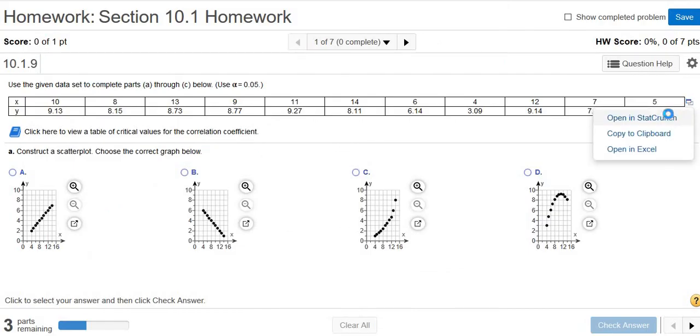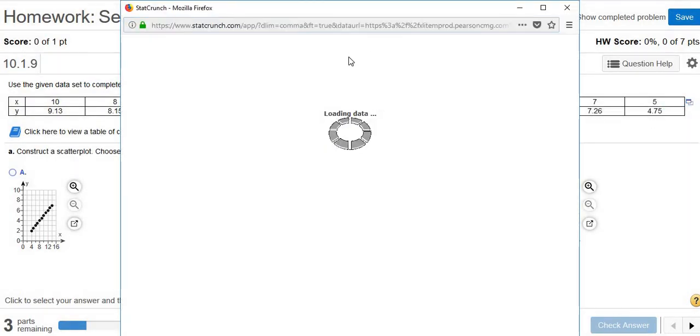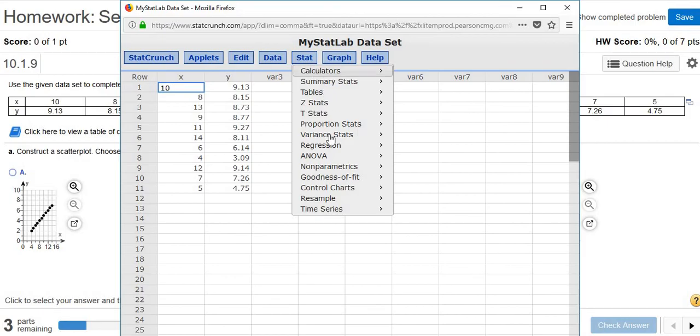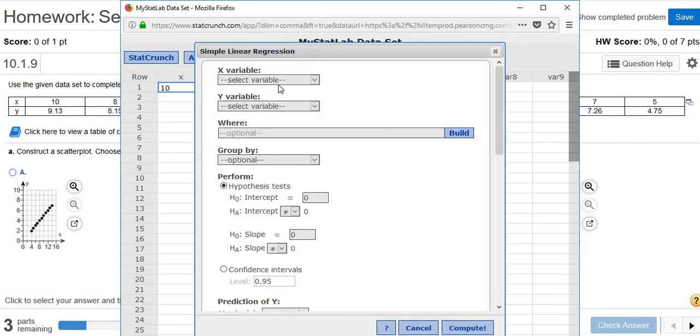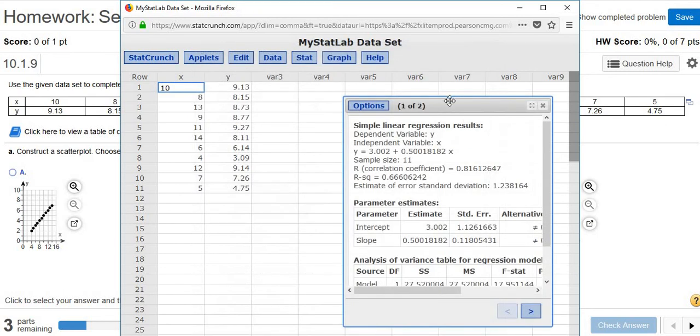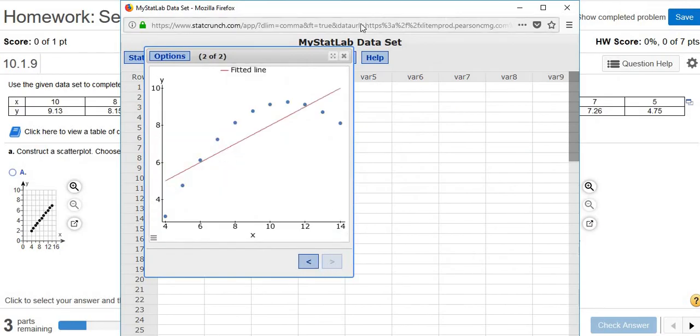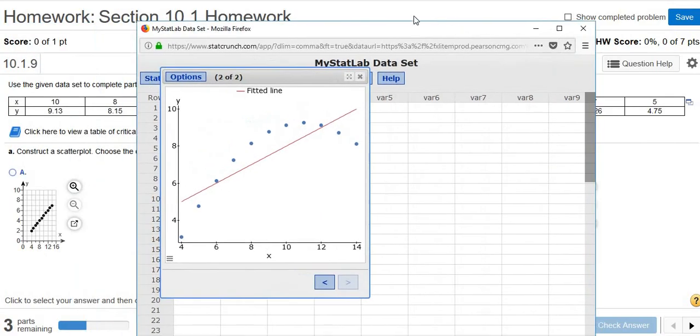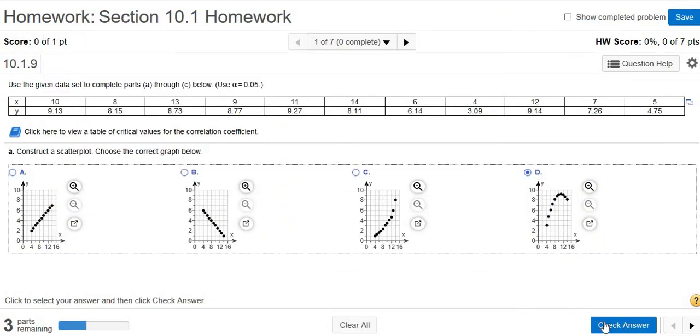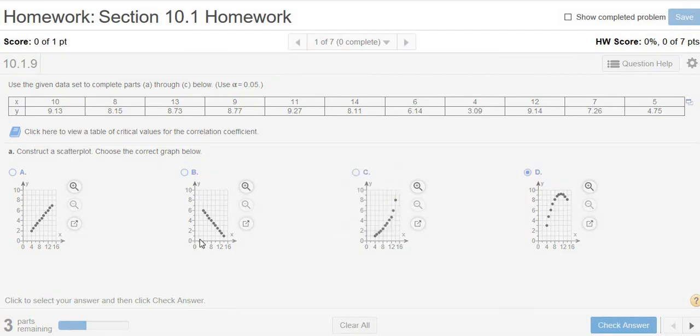Let me do that again so you see it. You click the little box, click 'Open in StatCrunch.' You go to Stat, Regression, Simple Linear. Always just pick the first thing and pick the second thing. Ignore all of this stuff. Just click Compute and you get all this information here, which we'll use later. Just click this little arrow here on the bottom right and there's the scatter plot. So that's going to be our scatter plot. Check answer. Yay. All right.